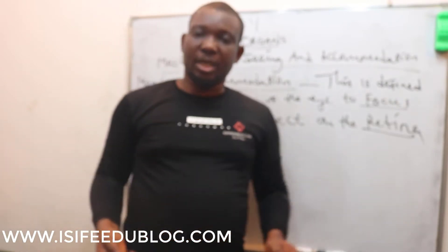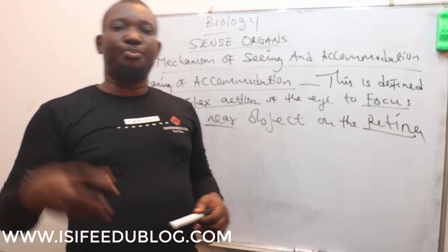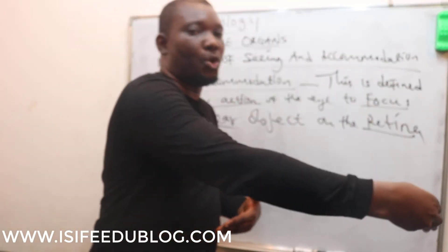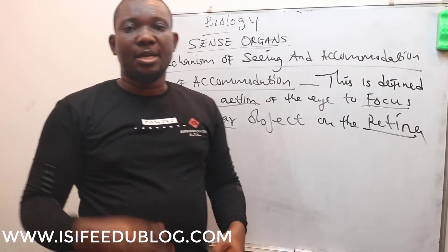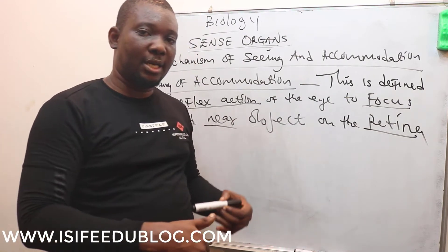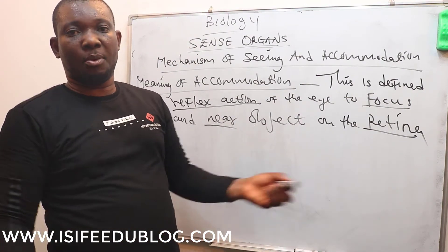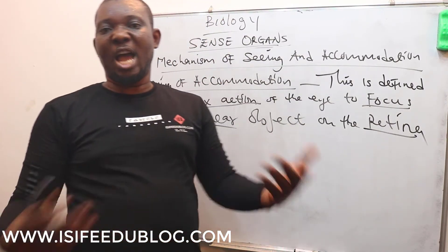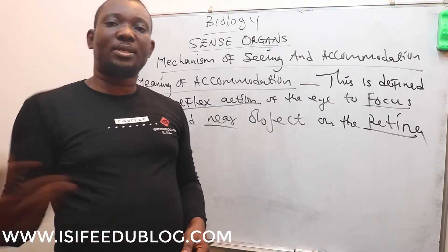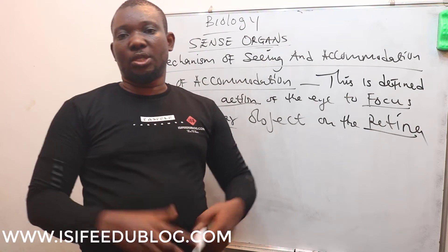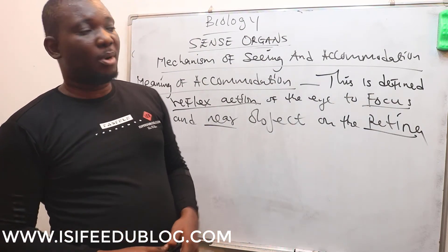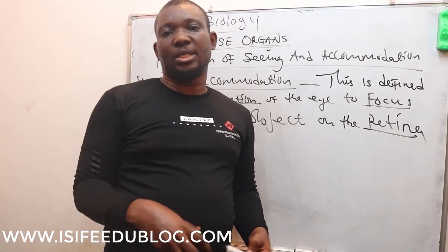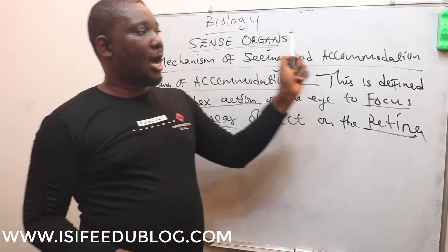Accommodation is the ability of the eye — when an object is close to the eye — to bring that object to fall on the retina. Not before the retina, not behind the retina. If the image of the object falls before the retina, that is not accommodation. Some people have problems with accommodation, which can lead to eye defects such as hypermetropia (long-sightedness) or myopia (short-sightedness). But if the eye can focus well to bring objects to drop on the retina — not before, not after — that is accommodation.